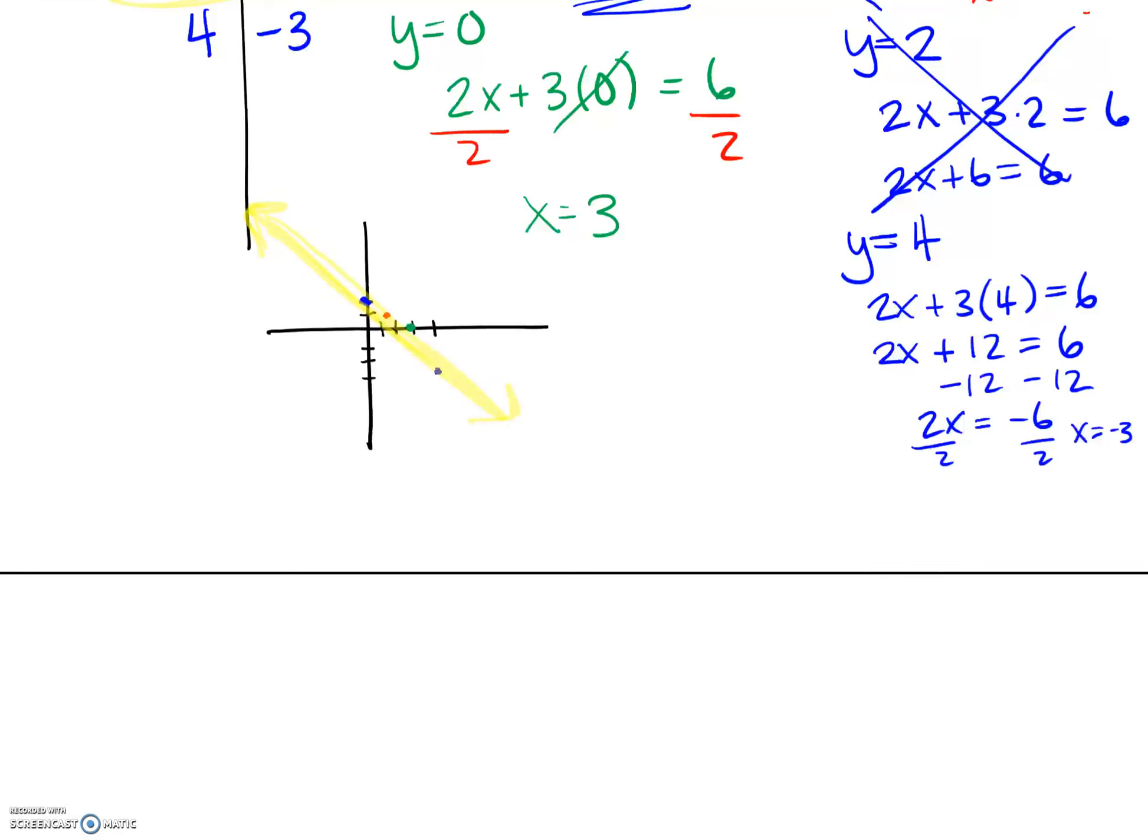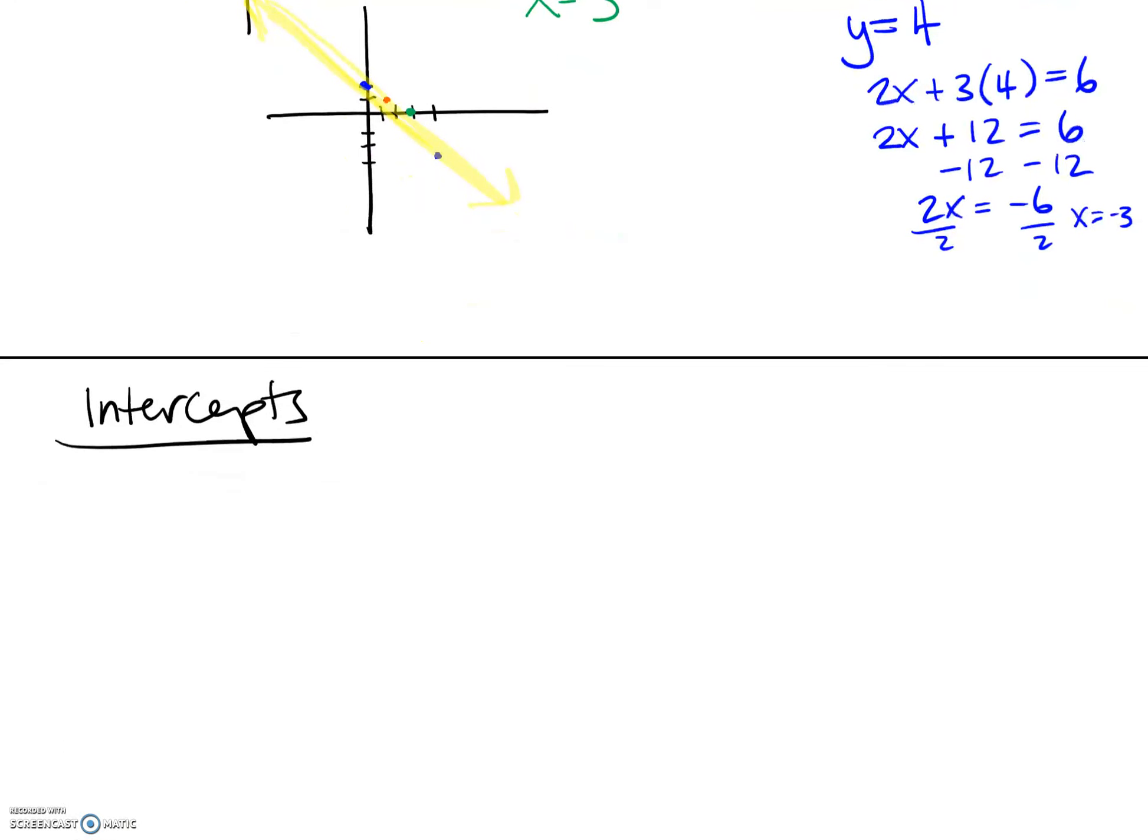Woohoo! All right, we have two intercepts. One is the x-intercept. And this is the point at which a graph crosses the x-axis. And the y-intercept is the same thing. We would just change this to y and this to y. So the point where the graph crosses the y-axis.